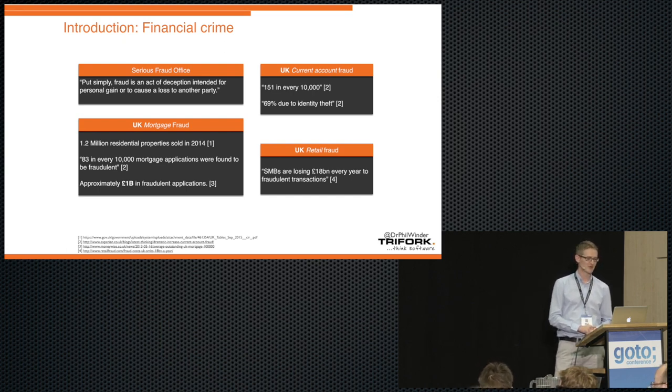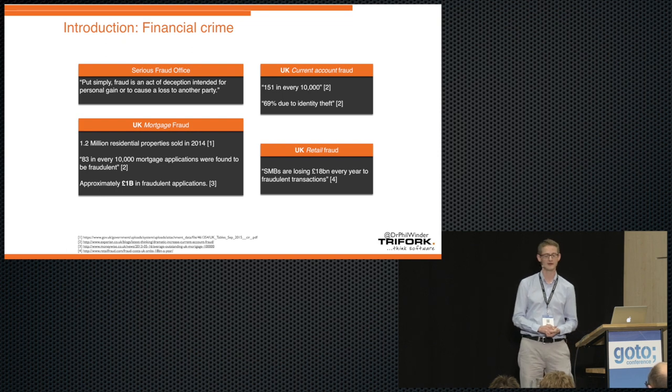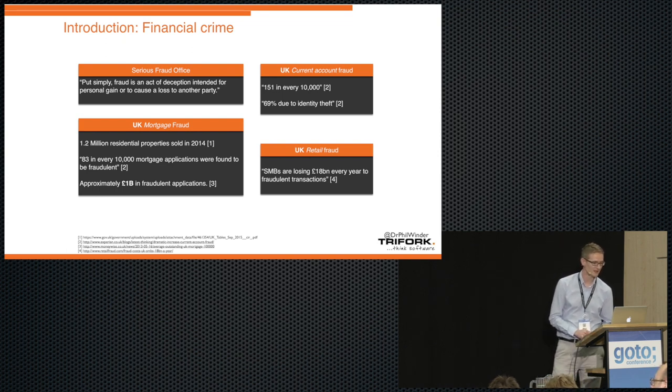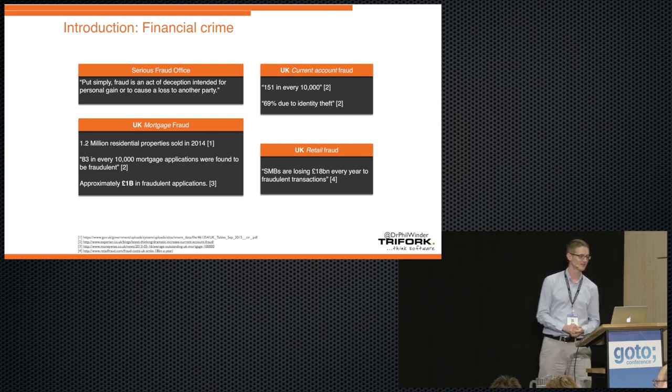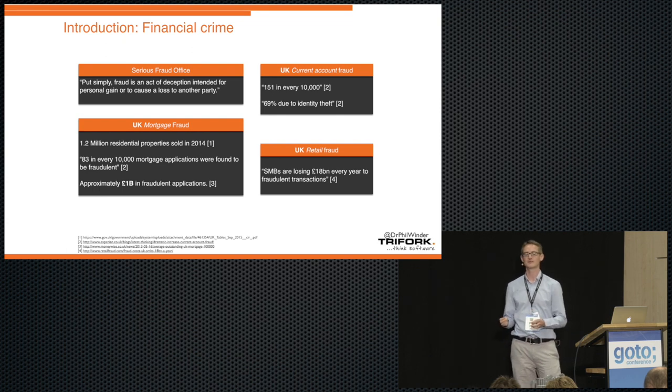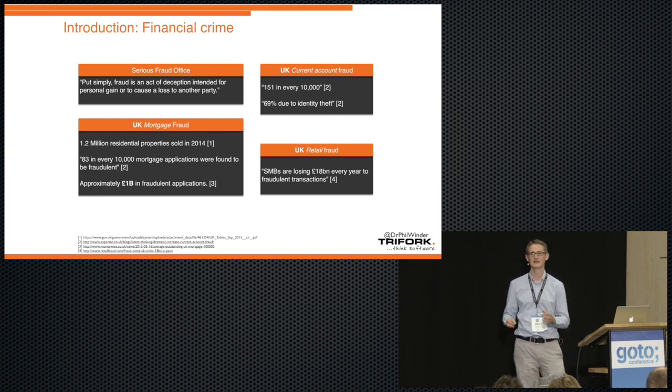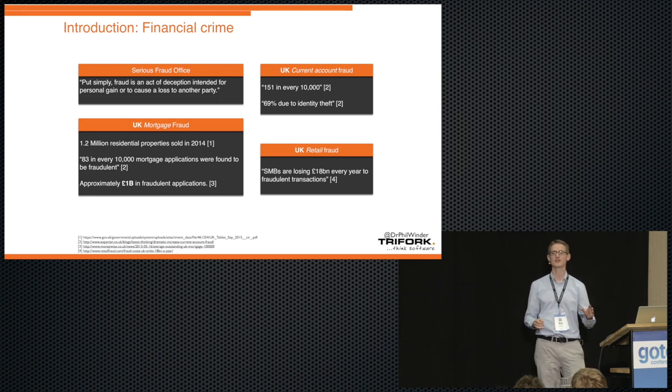Anybody that's trying to do wrong or to do harm for their own financial gain is considered fraud. We've got UK mortgage fraud listed there. In 2014, 1.2 million properties bought and sold in the UK. And 83 in every 10,000 of those applications were fraudulent. So that's not quite 1%, 0.83%.